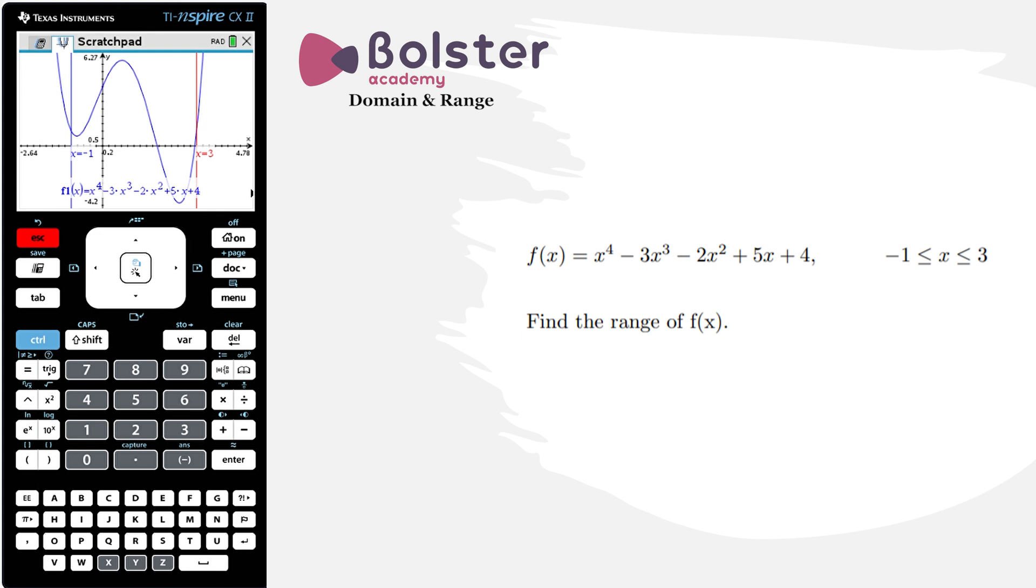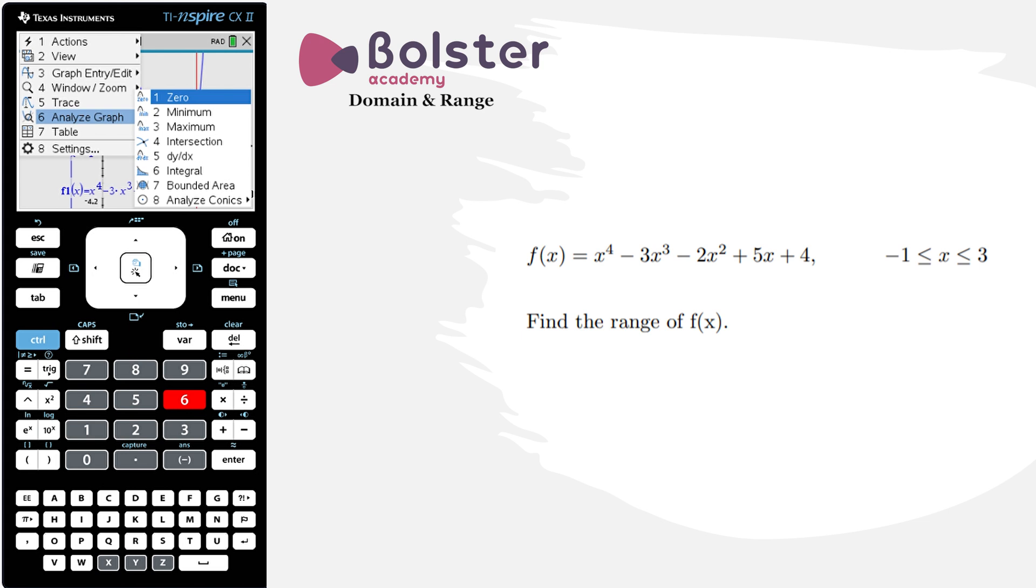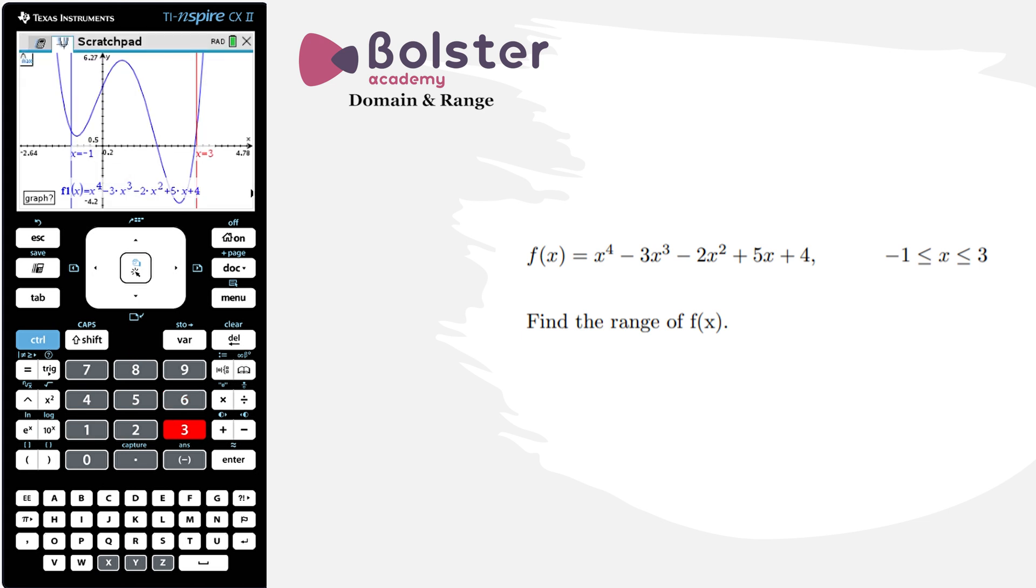To get the maximum, we're going to go menu, analyze graph, number three, maximum. It's asking me what graph I want, so I choose the graph I'm interested in and choose my lower and upper bounds around that maximum point on the graph. We can see it's at x equals 0.62 and the y value is approximately 5.76.